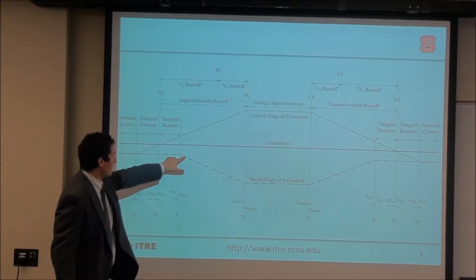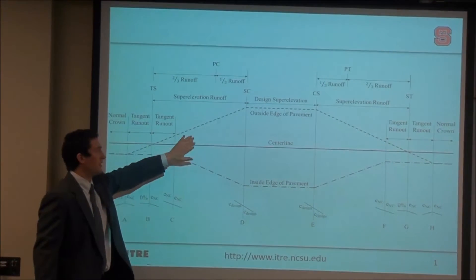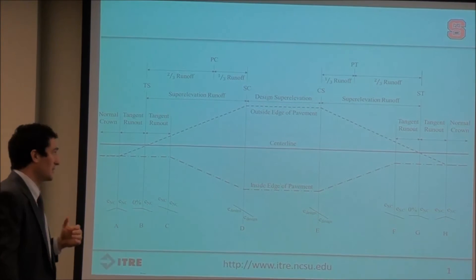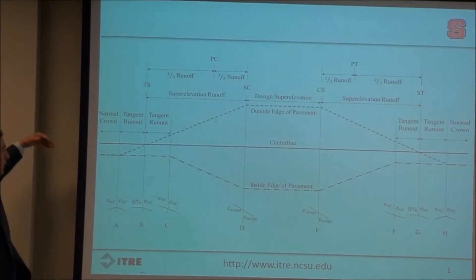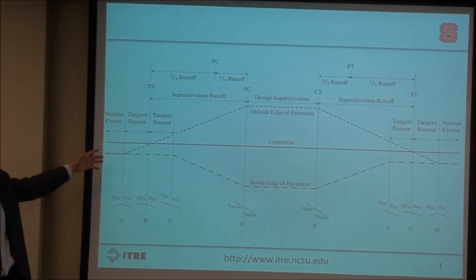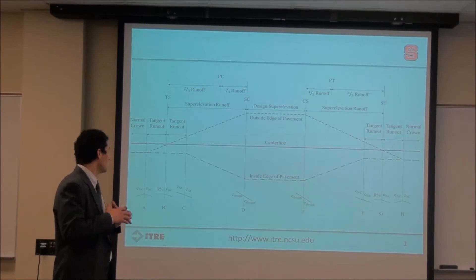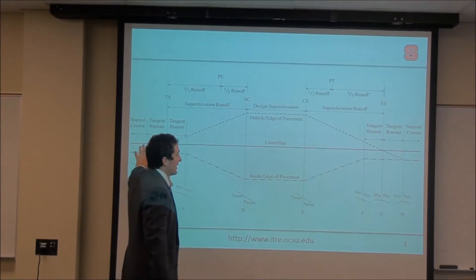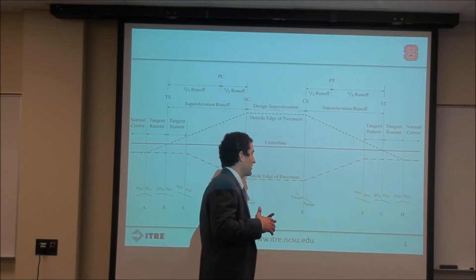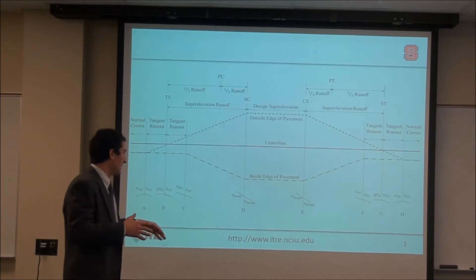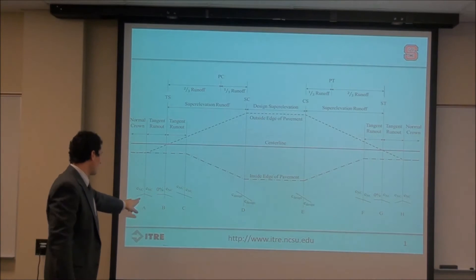The line below the center line represents the inside edge of pavement, and the line on top represents the outside edge of pavement. Starting from point A, as we approach the curve, we'll be in a tangent section with a normal crown cross slope. The same applies as we leave the curve and return to normal crown — a rooftop slope of 2% on each side of the center line. So points A and H both have the normal crown cross section.